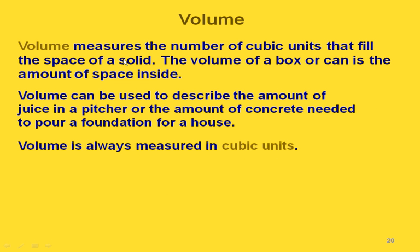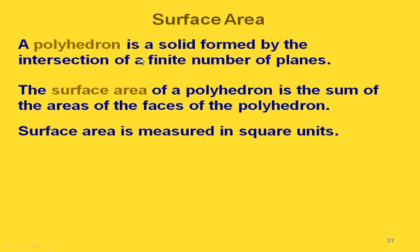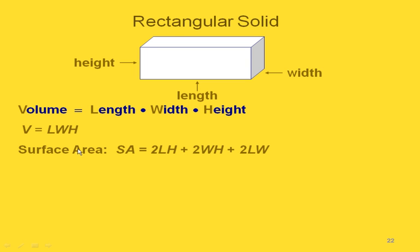Now let's talk about volume and surface area. Volume is a three-dimensional measurement — it measures the number of cubic units that fill the space of a solid. We could use volume to describe the amount of juice in a pitcher or the amount of concrete needed to pour a foundation. Volume is always measured in cubic units, written as units cubed. Surface area is different: it's the sum of all the areas of all the faces of a solid, so it's measured in square units.